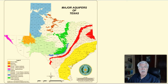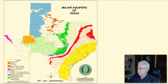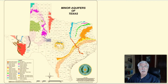Here are the locations. As you can see, pretty much anywhere you live, you're going to be living over an aquifer. And there are 21 minor aquifers in Texas.